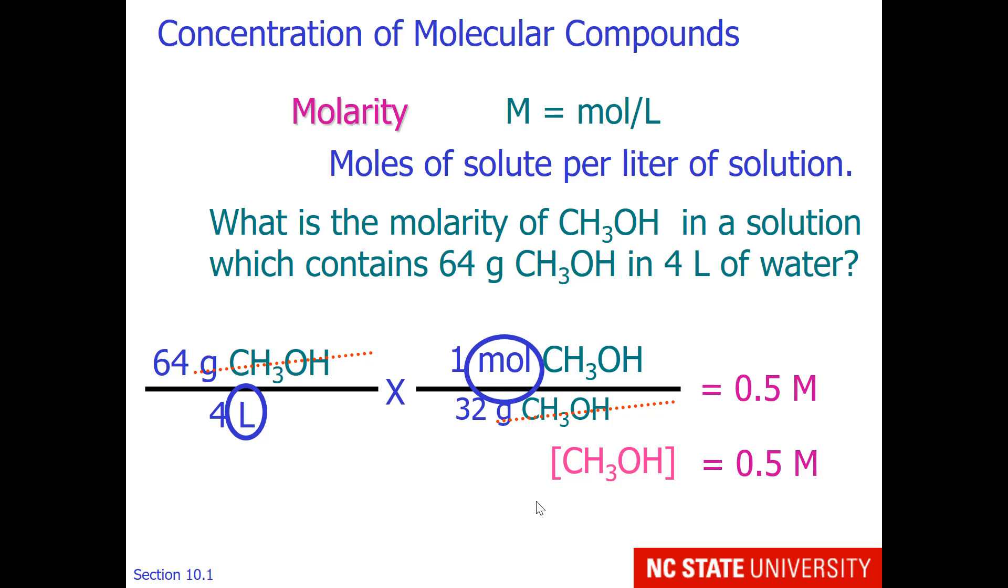And we would represent the concentration in square brackets. So you might read this, the concentration of methanol is 0.5 moles per liter.